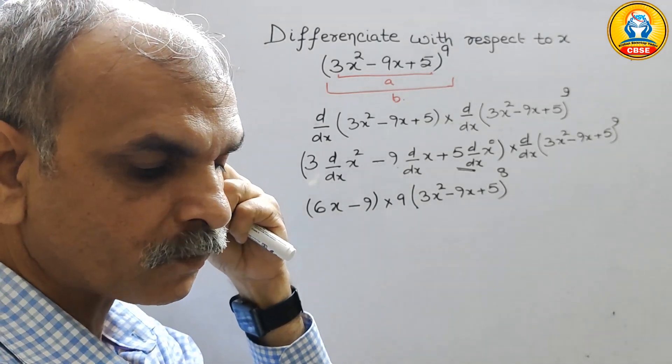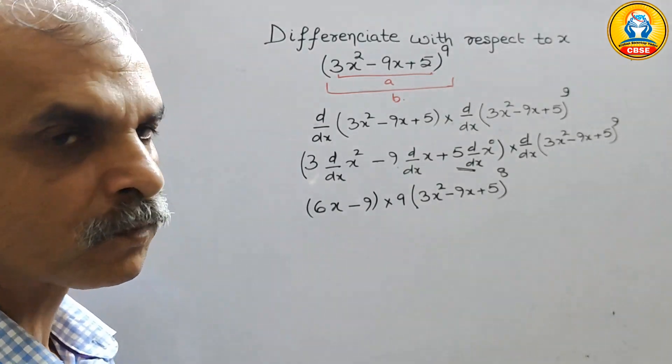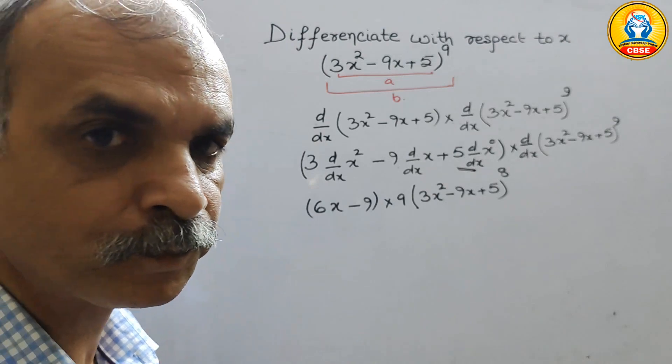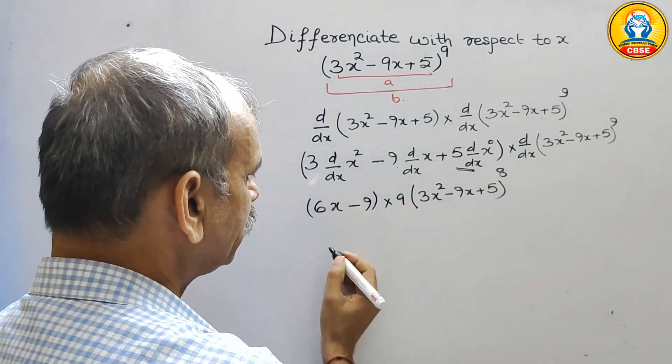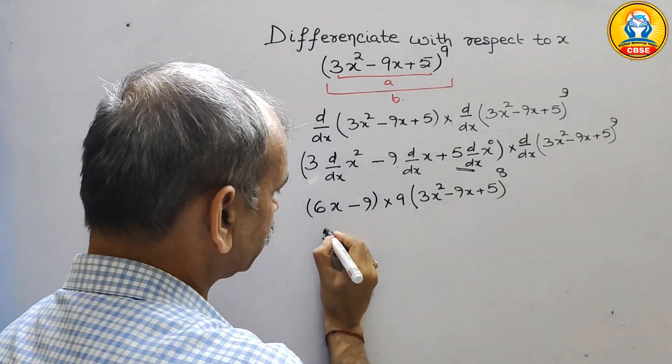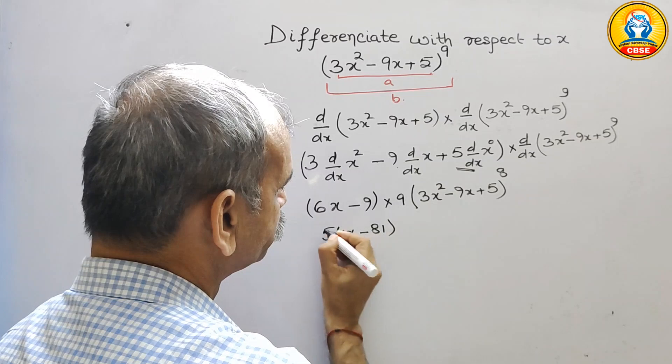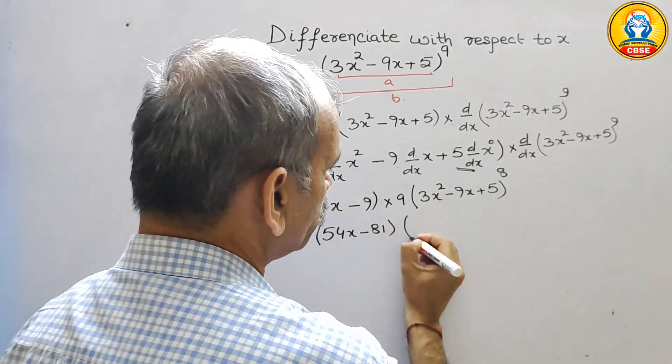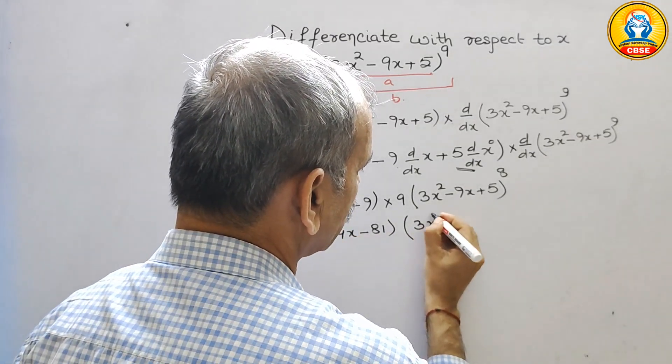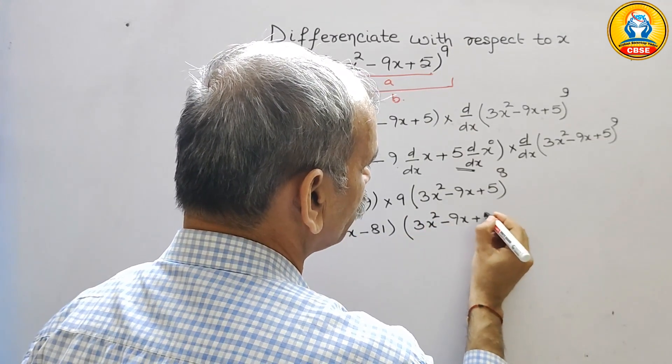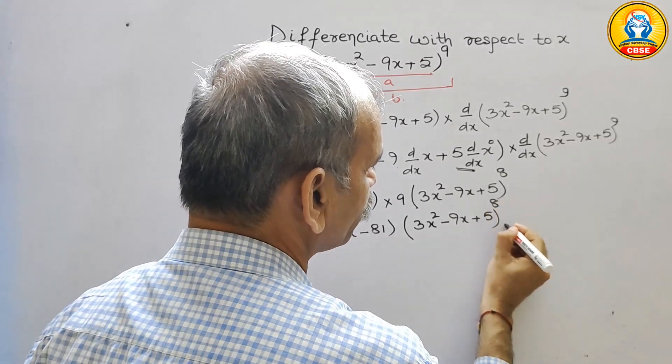So we have to solve like this. So here we will multiply this into this. 9 into 6 is 54x minus 81, into 3x square minus 9x plus 5, and power is 8.